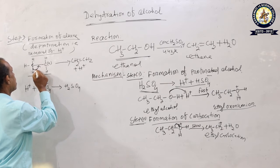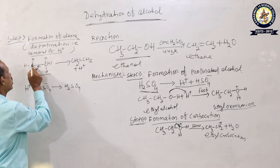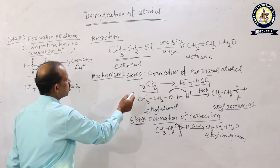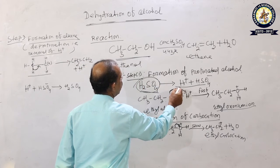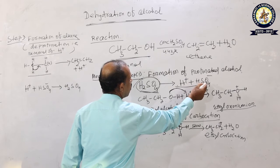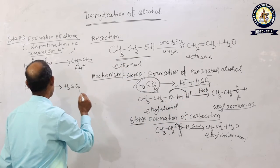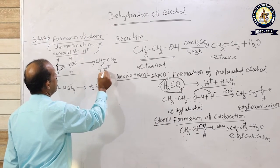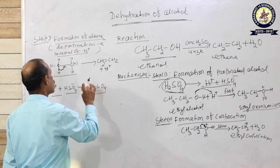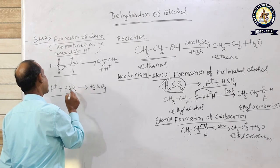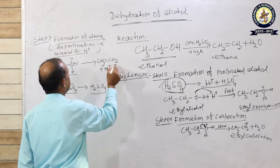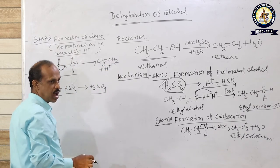When the H⁺ is removed from the beta carbon, the electrons move to form a double bond between the two carbons, giving CH₂=CH₂ (ethene). The H⁺ released combines with the HSO₄⁻ already present in the reaction to regenerate H₂SO₄. Alternatively, the bisulfate ion abstracts the H⁺ from the carbocation to yield the alkene.